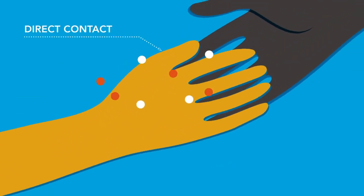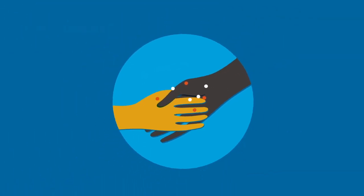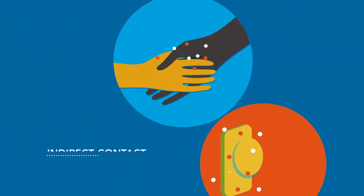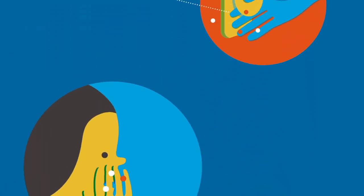Germs are everywhere. They can spread by shaking hands, hugging or kissing, and by touching something that has germs on it, then touching your eyes, nose, or mouth.